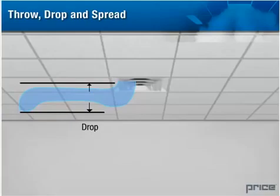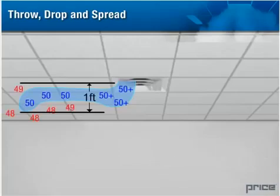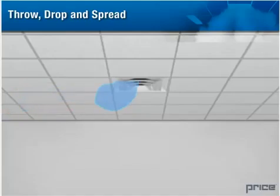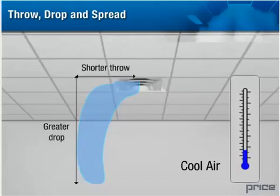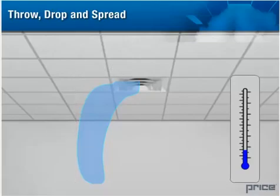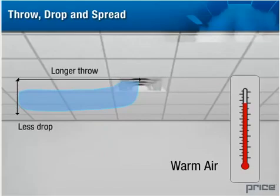Drop is the vertical distance from the diffuser to the bottom of the air jet. When we determine the drop, we also measure this distance for a specific air velocity. For example, the drop of this SCD is one foot at a terminal velocity of fifty feet per minute, meaning the air velocity at a point one foot below the diffuser is fifty feet per minute. The temperature of the supply air affects both throw and drop: cool air is more dense and tends to fall away from the ceiling, resulting in shorter throw distances and greater drop.